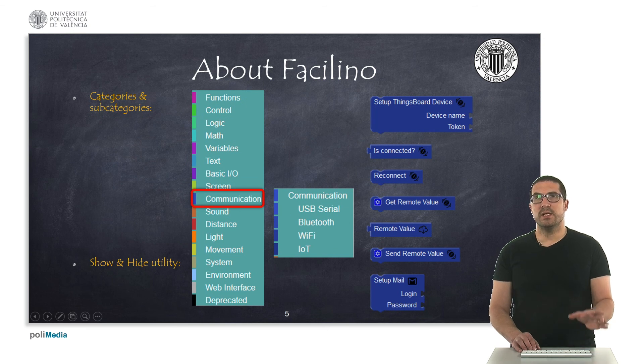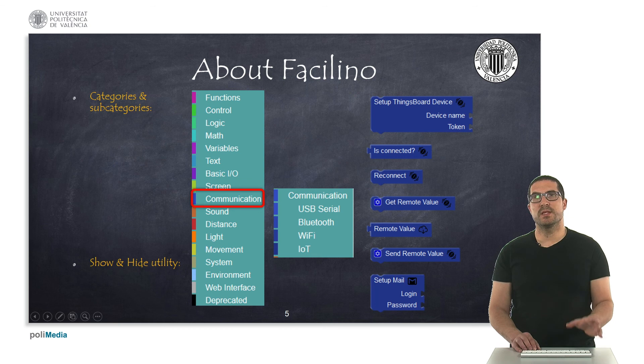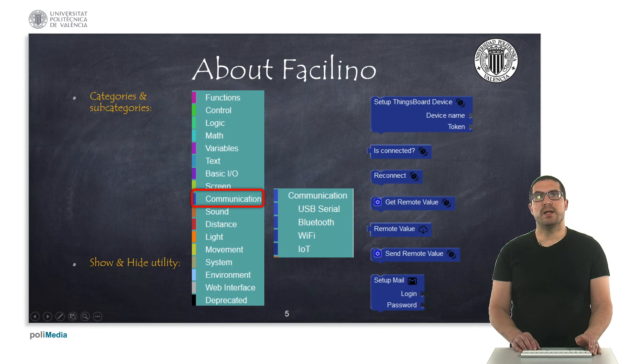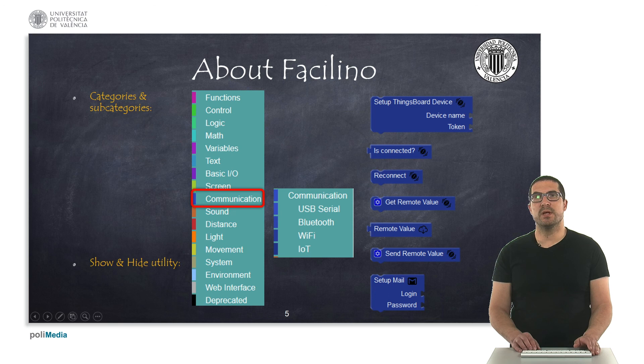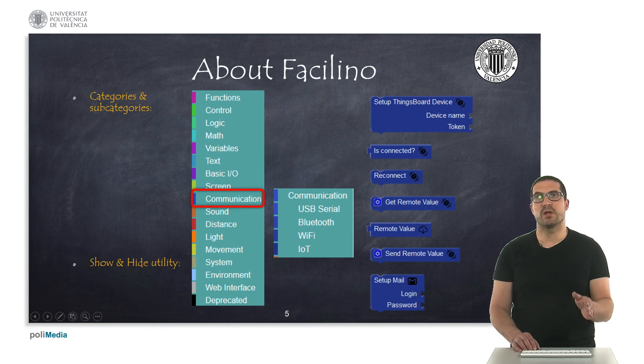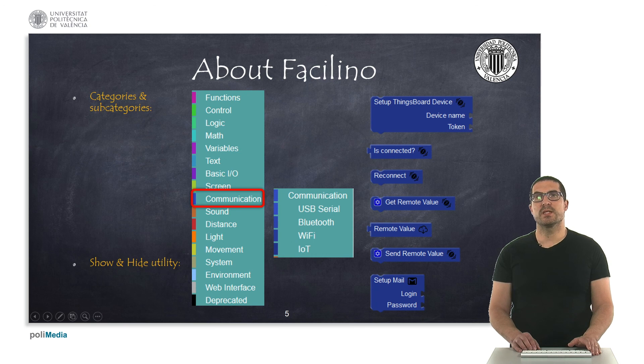On the right side of the application you will see a list with categories with all the kinds of instructions that you have in Facilino. On each category you can click on it and usually you will find a subcategory, and within the subcategory you can click on it and then you will have a list of specific instructions for that subcategory, as you can see in these images.